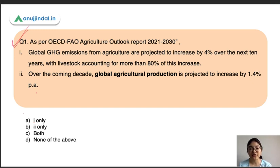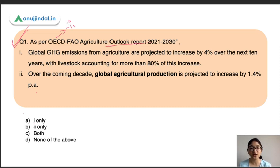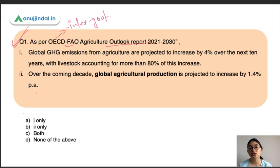The first question is based on the OECD-FAO Agriculture Outlook Report 2021–2030. OECD stands for Organization for Economic Cooperation and Development — an intergovernmental economic organization presently consisting of around 38 countries. FAO is the Food and Agriculture Organization, a specialized agency of the United Nations. This outlook report is a combined effort of OECD and FAO, providing projections for different agriculture commodities for the next decade.